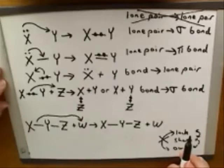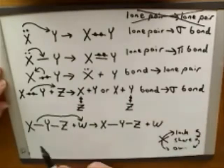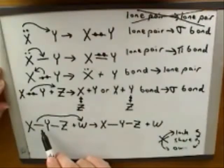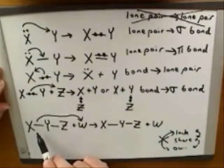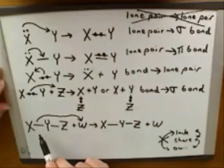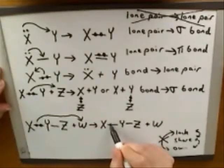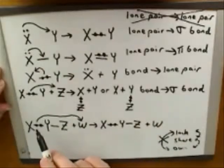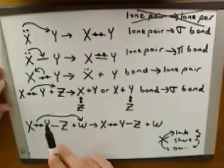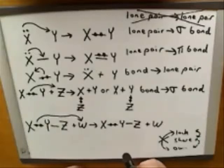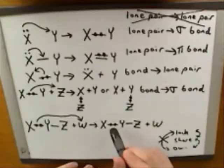Where are the electrons coming from? The tail of the arrow is pointing to the bond between X and Y, so the electrons are coming from the bond between X and Y. I'll go ahead and draw those electrons in. Since the tail of the arrow is coming from those electrons, they're moving away from that position, so now I'll erase the bond between X and Y.